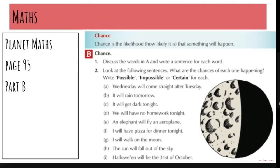H, the sun will fall out of the sky. That one's going to be impossible because the sun is held up in space by gravity. So it's not going to happen. And then I, Halloween will be on the 31st of October. That one is certain. Well done to anybody who answered that. Because Halloween is always on the 31st of October.